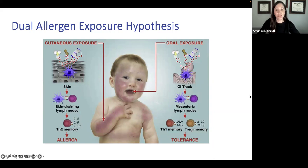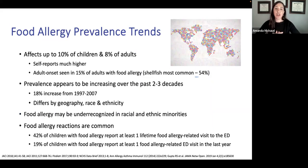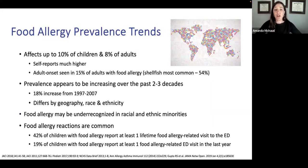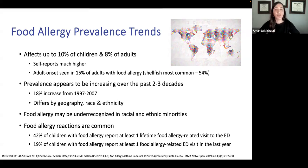Food allergy affects up to 10% of children and 8% of adults, with self-reports being much higher. Adult-onset food allergy is seen in 15% of adults with food allergy, with shellfish being the major culprit — over half have shellfish allergy. Prevalence is increasing over the last several decades. The patterns of food allergies differ by geography, race, and ethnicity. For example, in the Middle East where peanut-containing foods are introduced early, we don't see much peanut allergy, but we may see more sesame allergy there and in Greece.